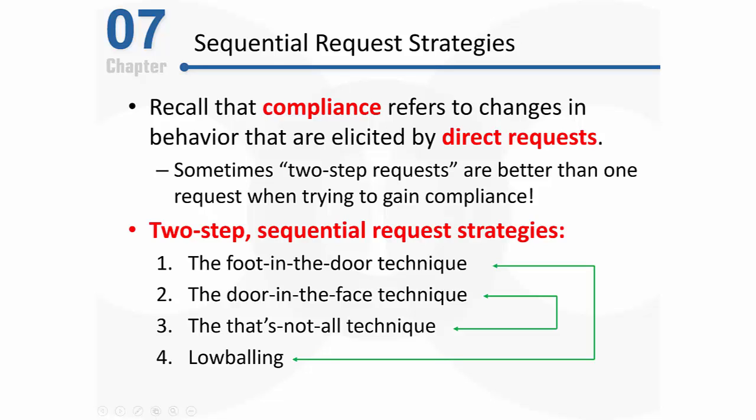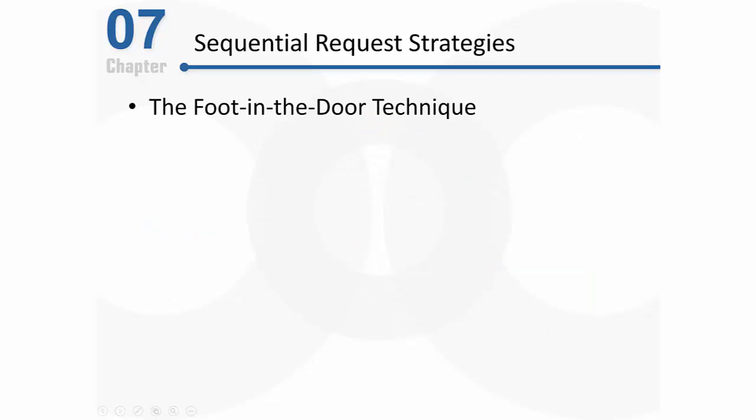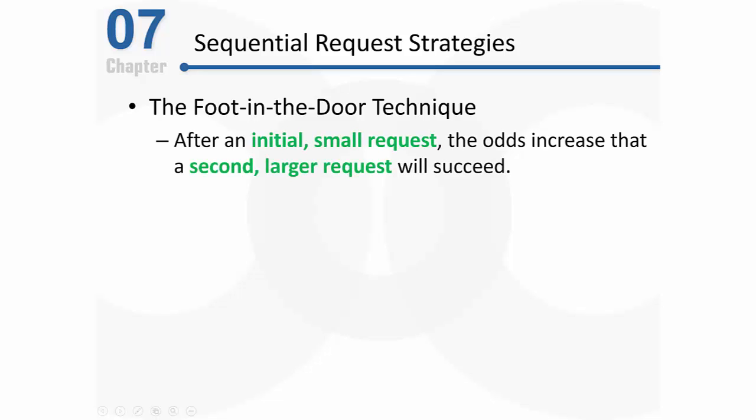The foot-in-the-door technique is a two-step compliance strategy where a person sets the stage for their real request by first asking someone to comply with a much smaller request. For example, if I need $50, I might start by asking you for only $10. After that initial small request, the odds increase that my second, larger request for $50 will be more successful.